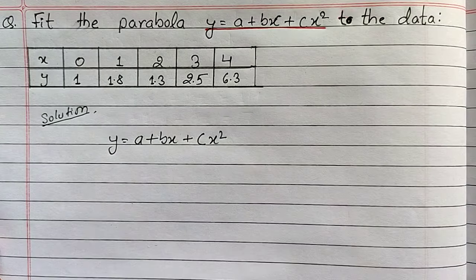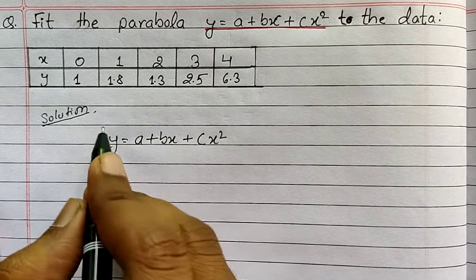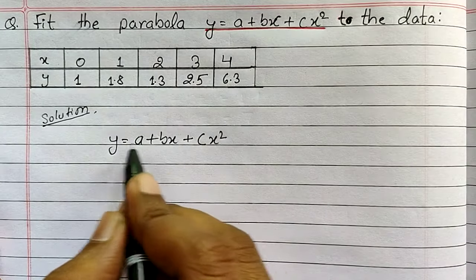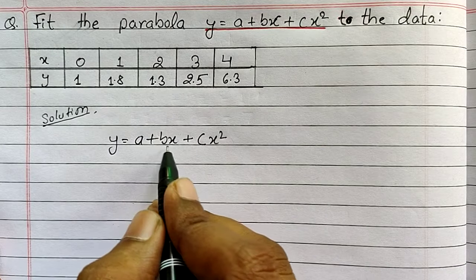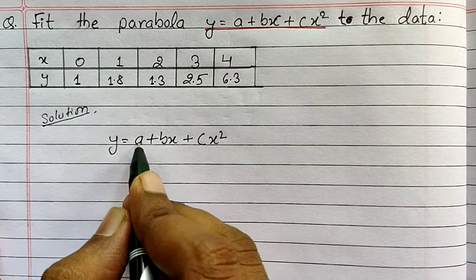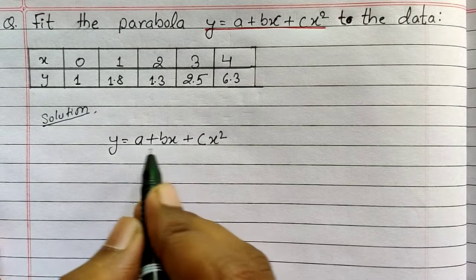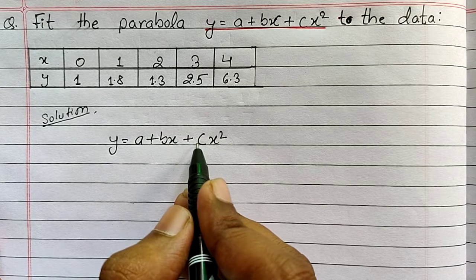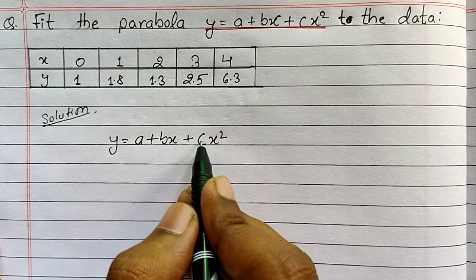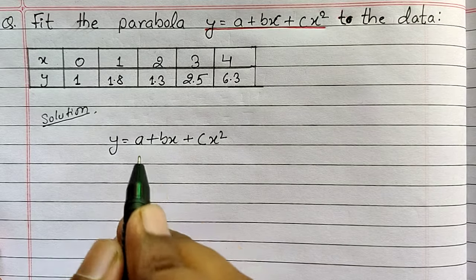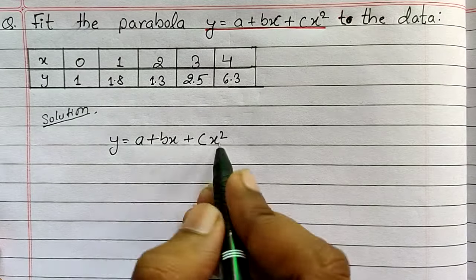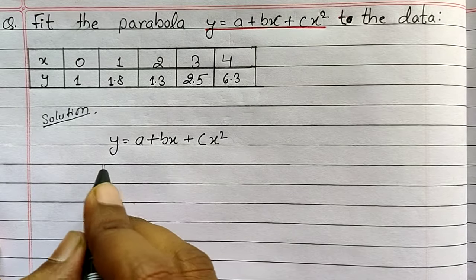As you can see I have written the solution and the given equation is y equals to a plus bx plus cx squared. Here we have three constants a, b and c. It means for finding the value of a, b and c we must have three equations, so let's derive three equations out of the given equation.